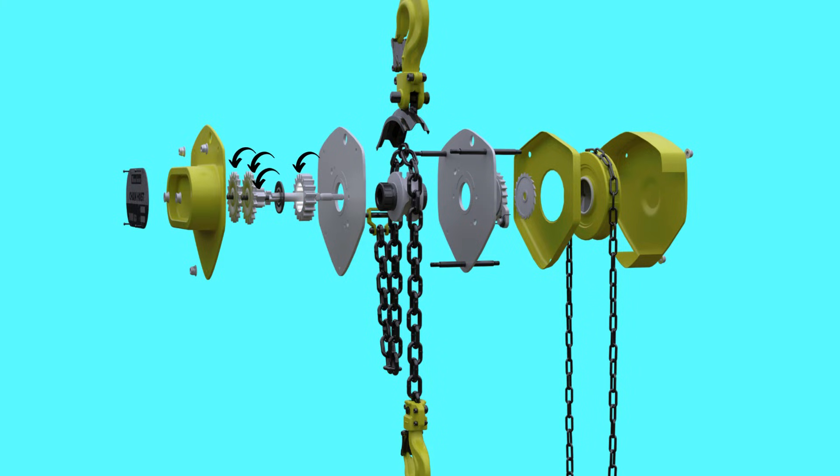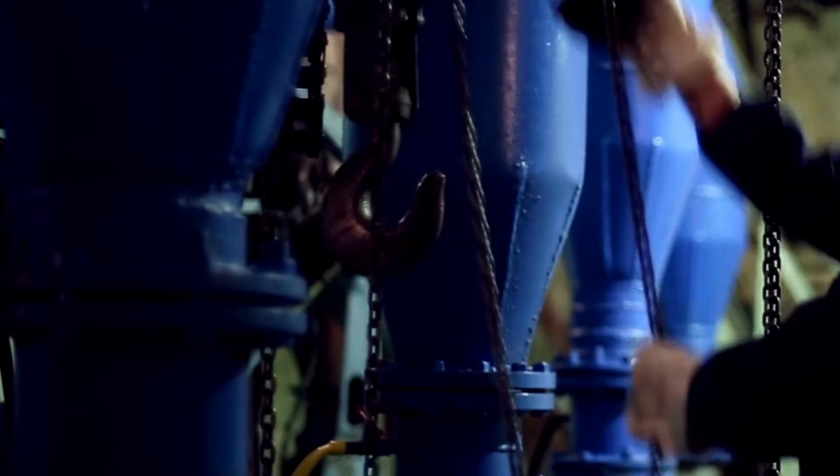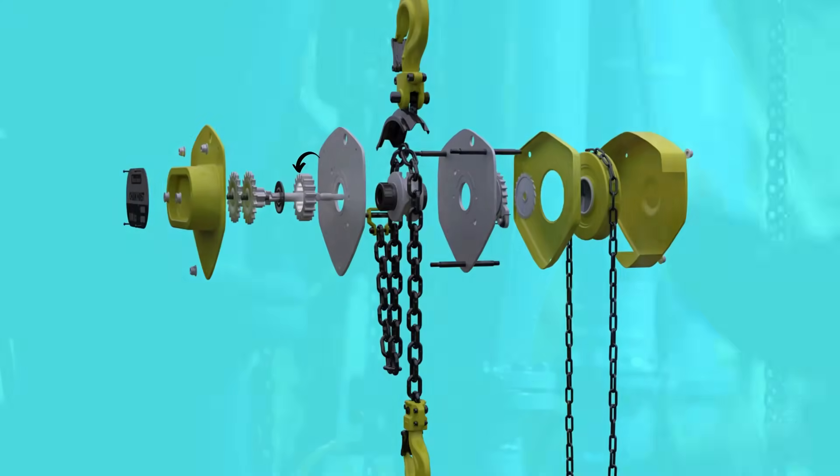Inside the lifting mechanism are multiple gears. Larger gears move slower than smaller gears, but create more force. This is why chain hoist lifts the load very slowly.